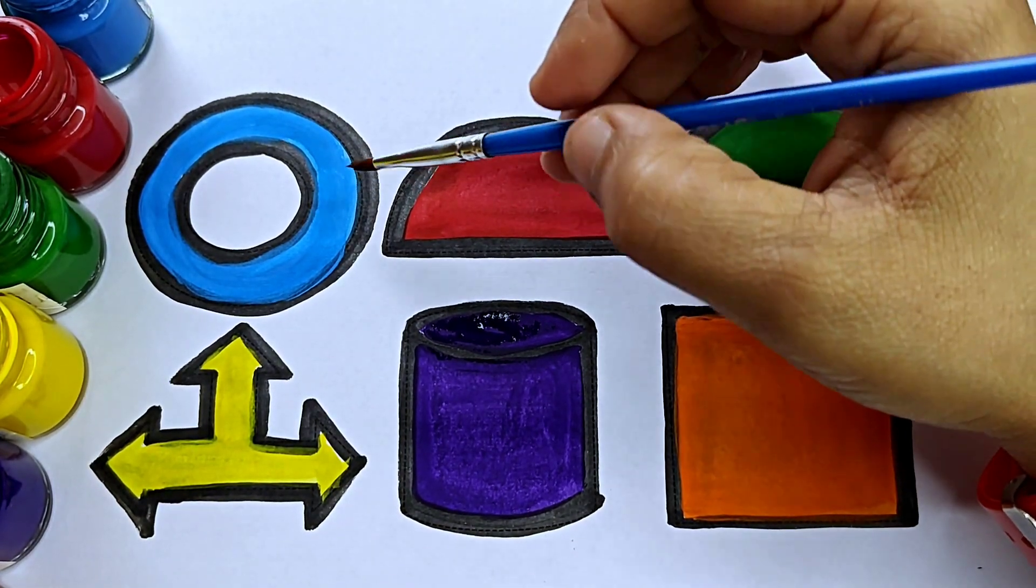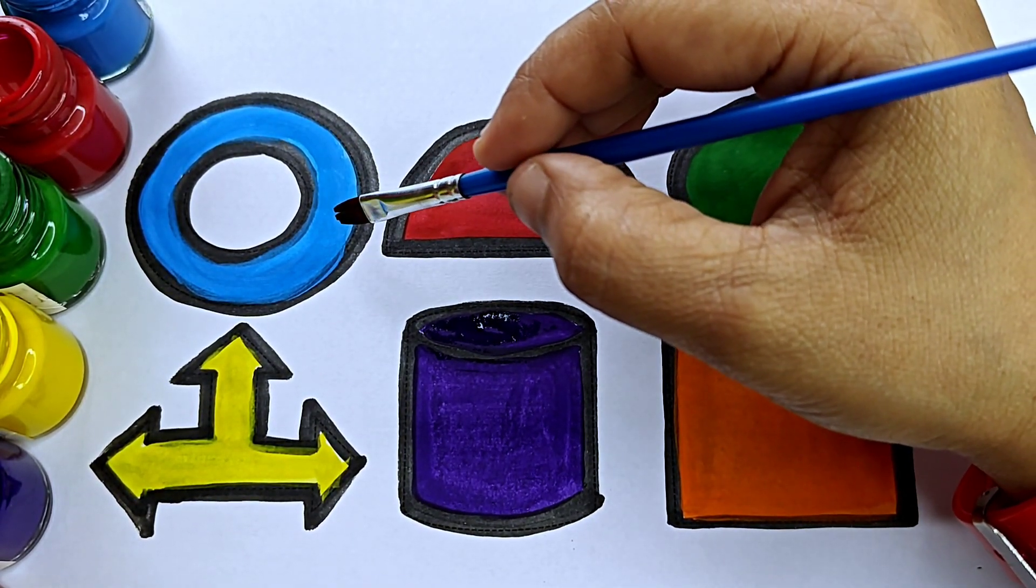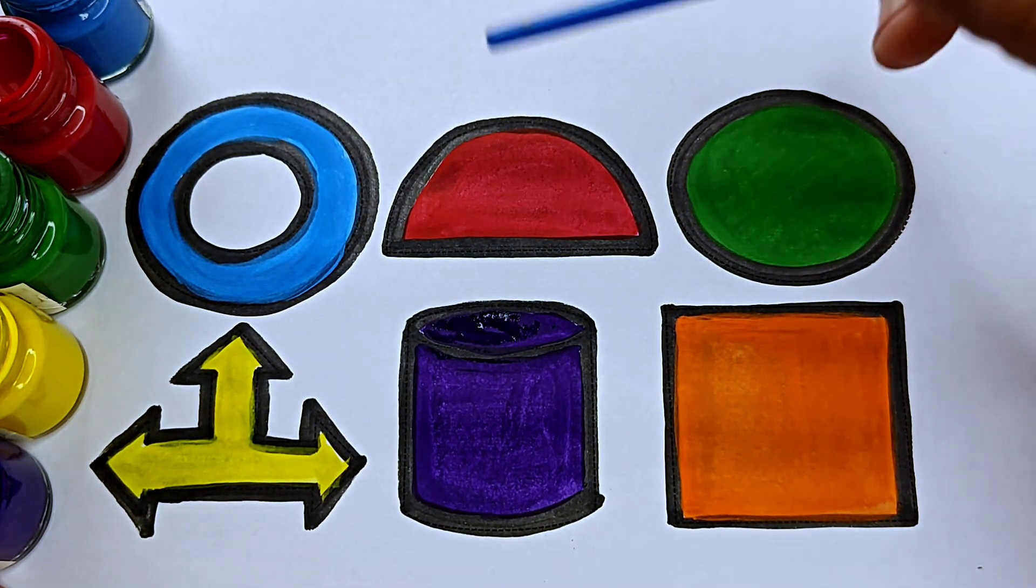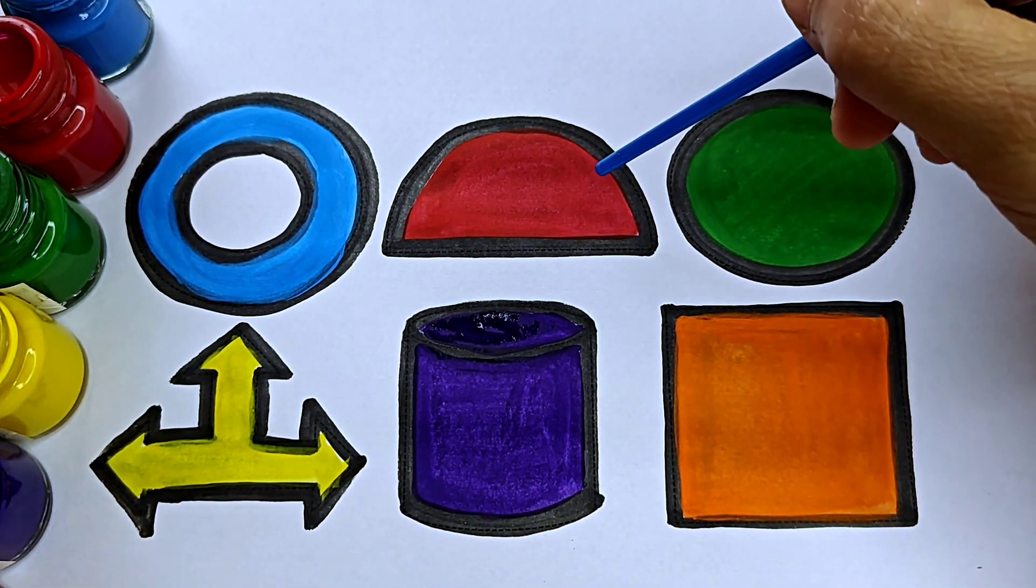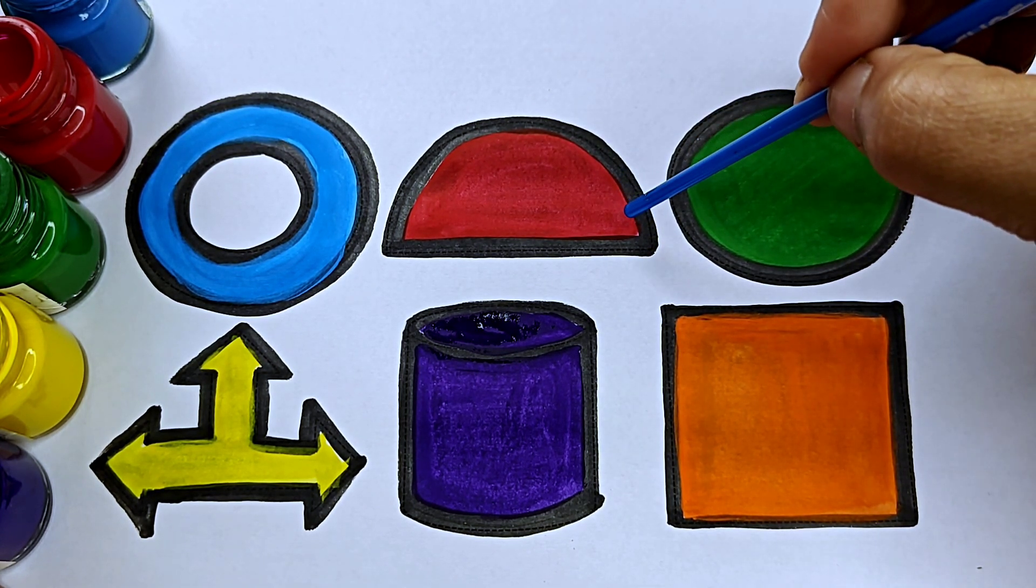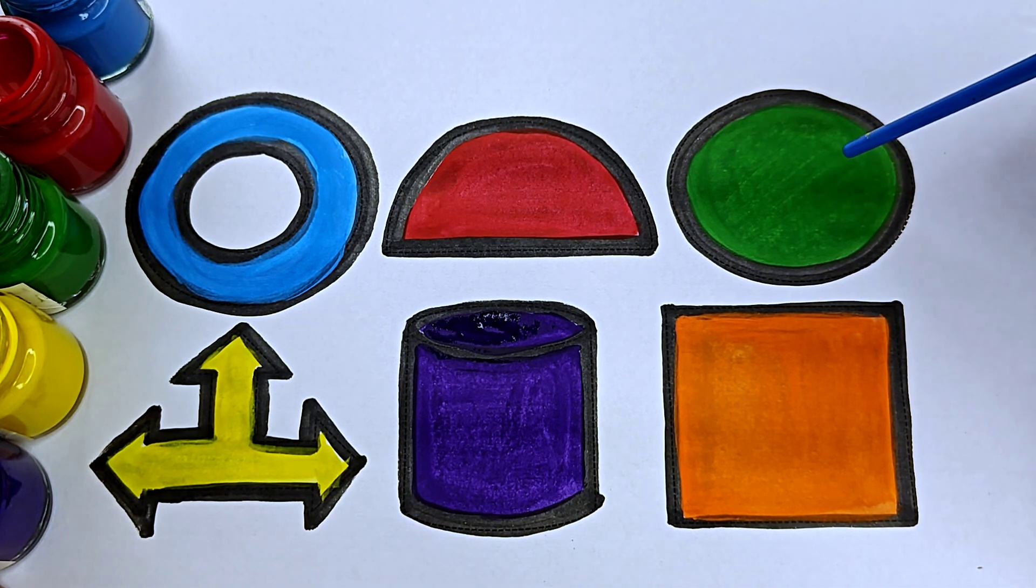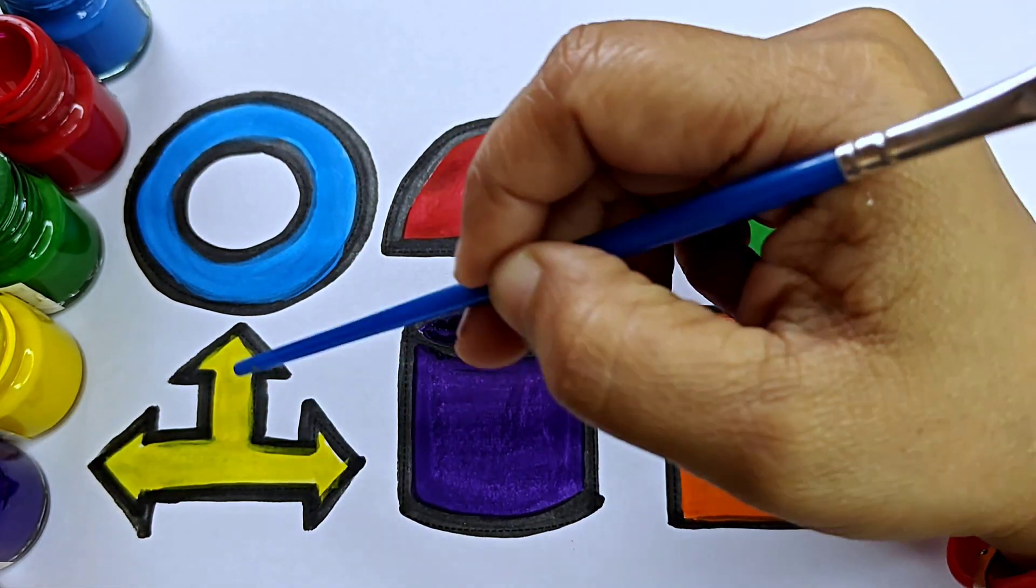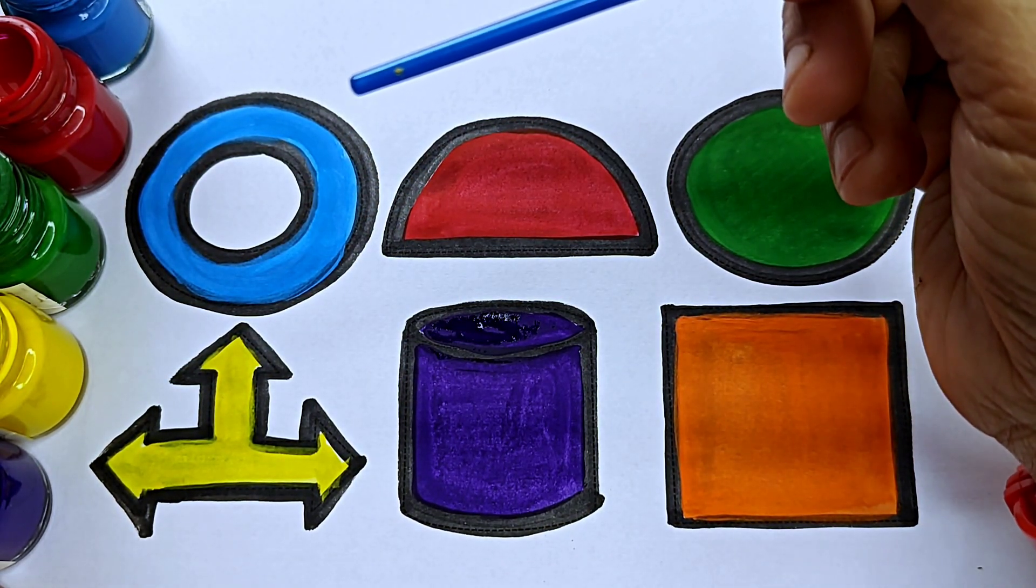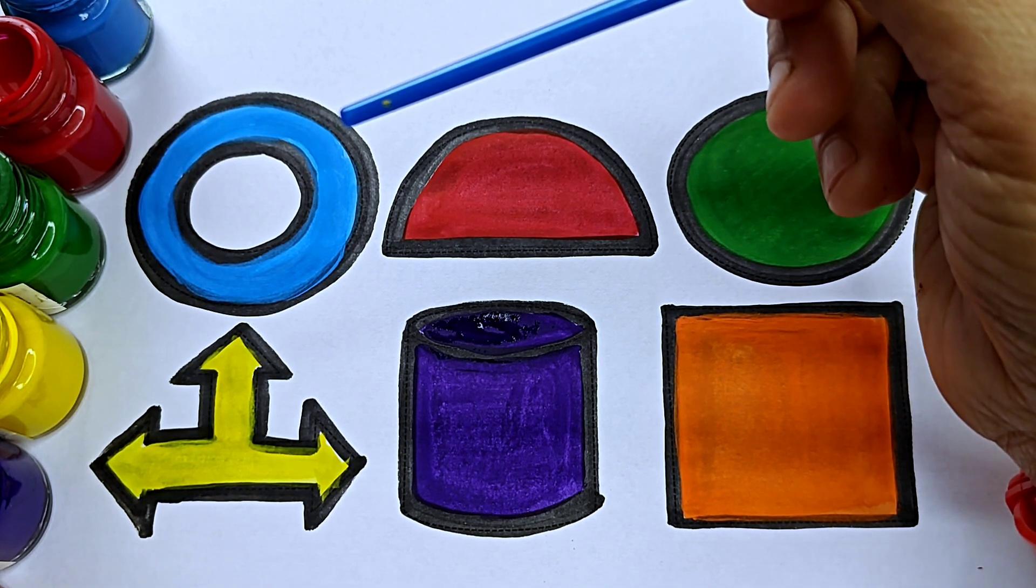This is hollow circle, H-O-L-L-O-W hollow circle, C-I-R-C-L-E circle. This is half circle, H-A-L-F half, C-I-R-C-L-E circle. This is circle, C-I-R-C-L-E circle. This is left, right, up arrow. L-E-F-T left, R-I-G-H-T right, U-P up, A-R-R-O-W arrow.